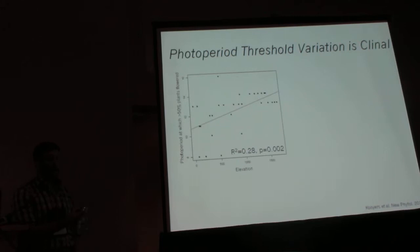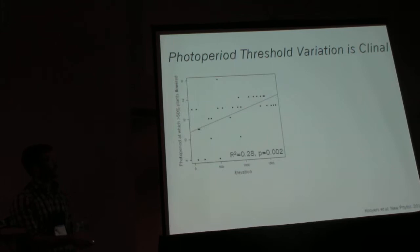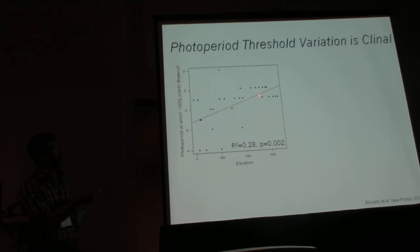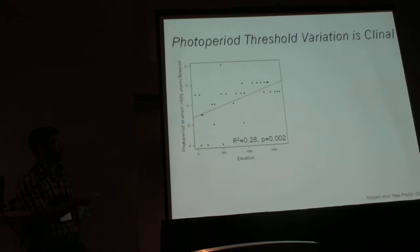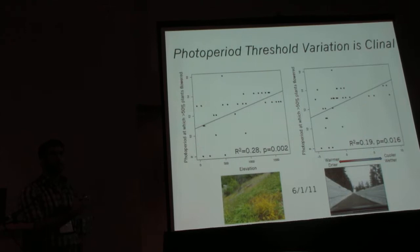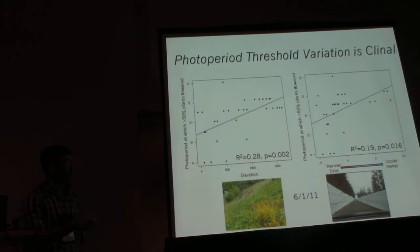For the photoperiod threshold survey, what I found bore out our preliminary data: there's a strong cline with elevation, and high elevation populations require longer days to flower than low elevation populations. Elevation is likely just a proxy for climate — at high elevation it's cooler and wetter than at low elevation — leading to growing seasons that start later in the calendar year.